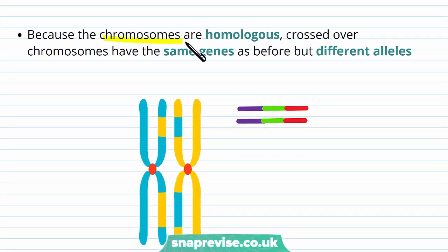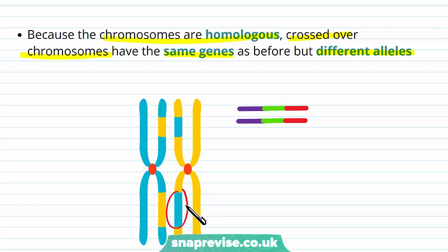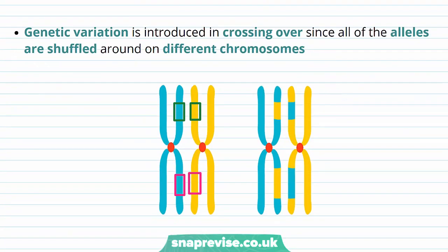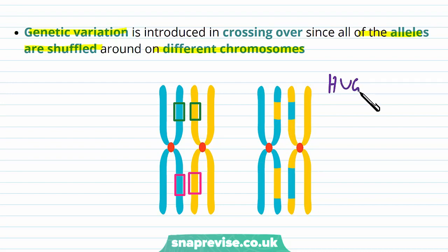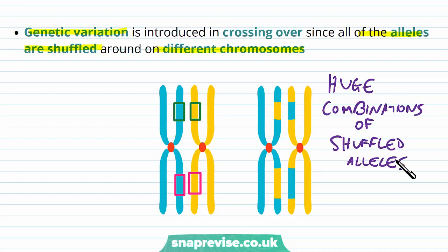Because the chromosomes are homologous, the crossed-over chromosomes still have the same genes in the same places, but now they have different alleles. On a chromosome, the same place codes for the same gene on the homologous pair, so both still carry these genes — what we now have is potentially a difference in the alleles. Crossing over therefore introduces genetic variation, because all of the alleles are shuffled around on lots of different chromosomes at lots of different sites. With 23 pairs, there is a huge combination of shuffled alleles every time meiosis happens, and this is beneficial to evolution overall.